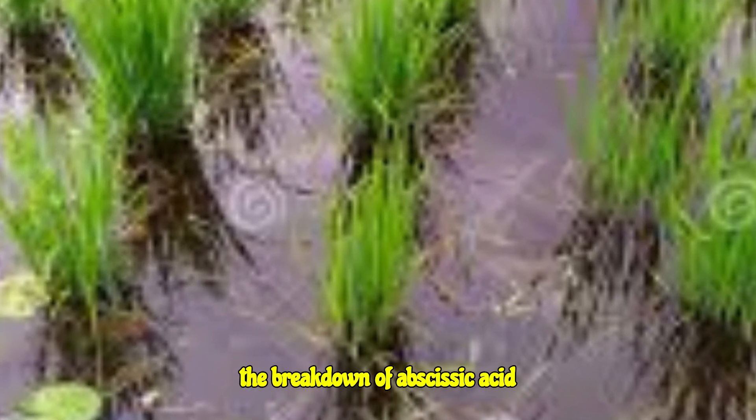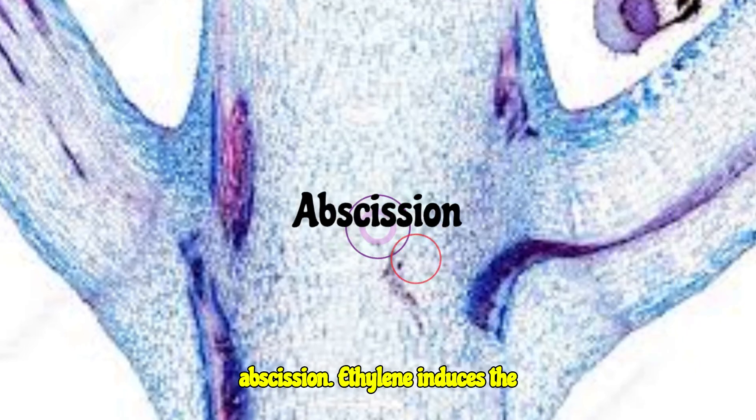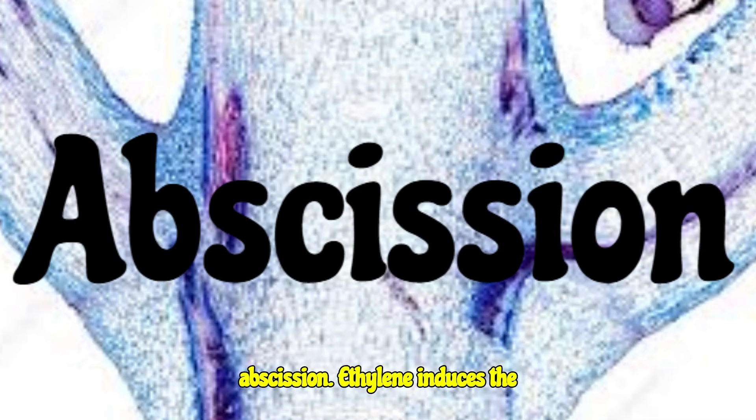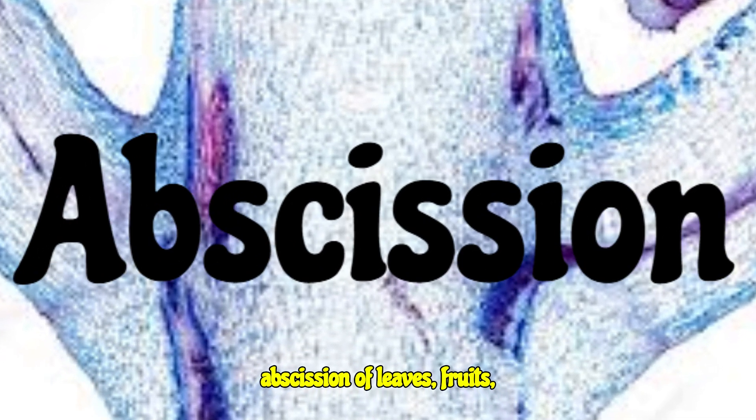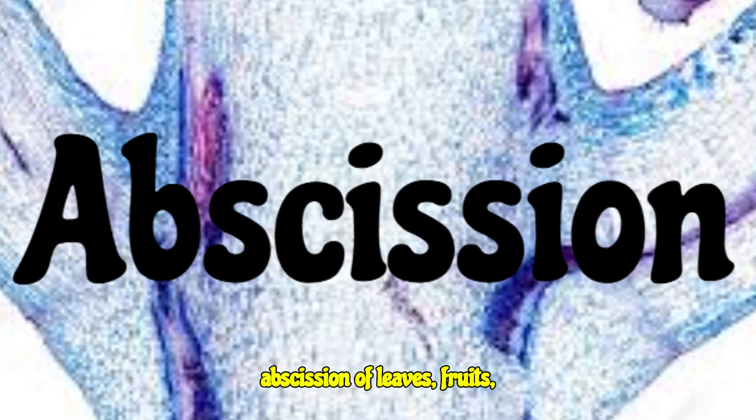Ethylene causes stem elongation in rice and other plants submerged in water by the breakdown of abscisic acid. Ethylene also induces the abscission of leaves, fruits, and flower petals.